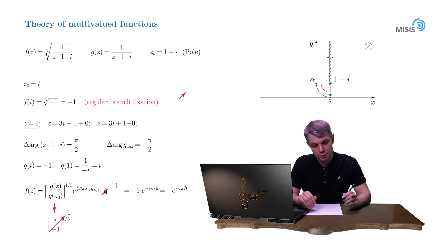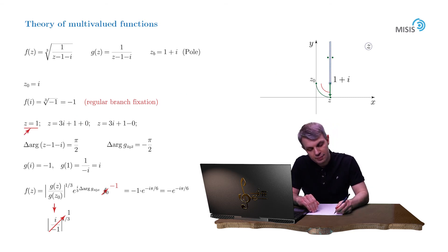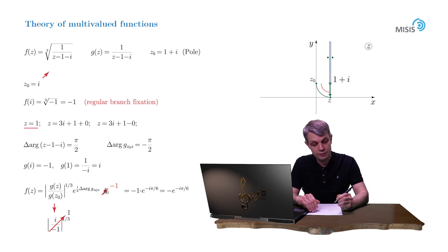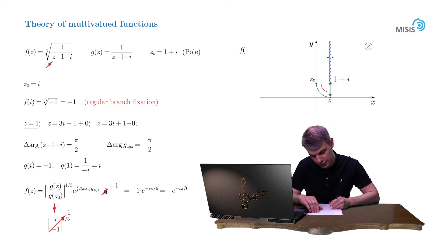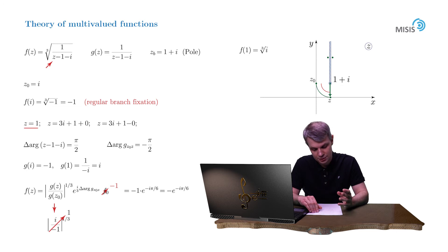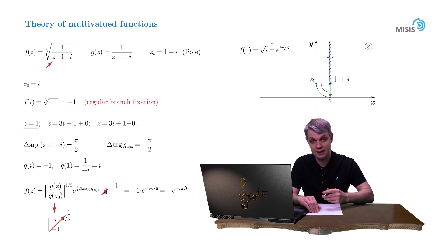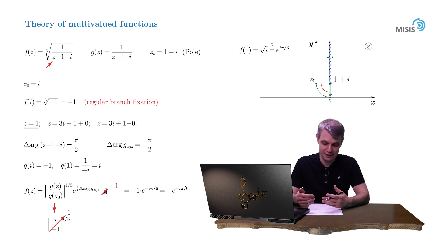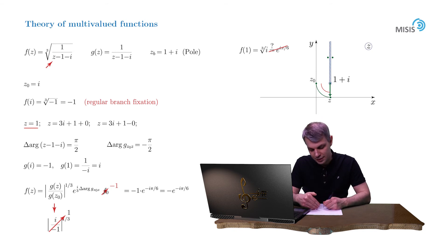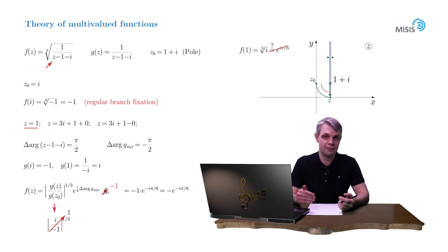It's interesting to note what would happen if we naively plug z equals 1 into the definition of f(z). Then f(1) would be the cubic root of i, and there is a great temptation to write e to the iπ/6 — but as we see, this is the wrong answer. It belongs to a different regular branch of our function, and the difference between the wrong and correct answers is precisely the factor e to the 2πi/3.